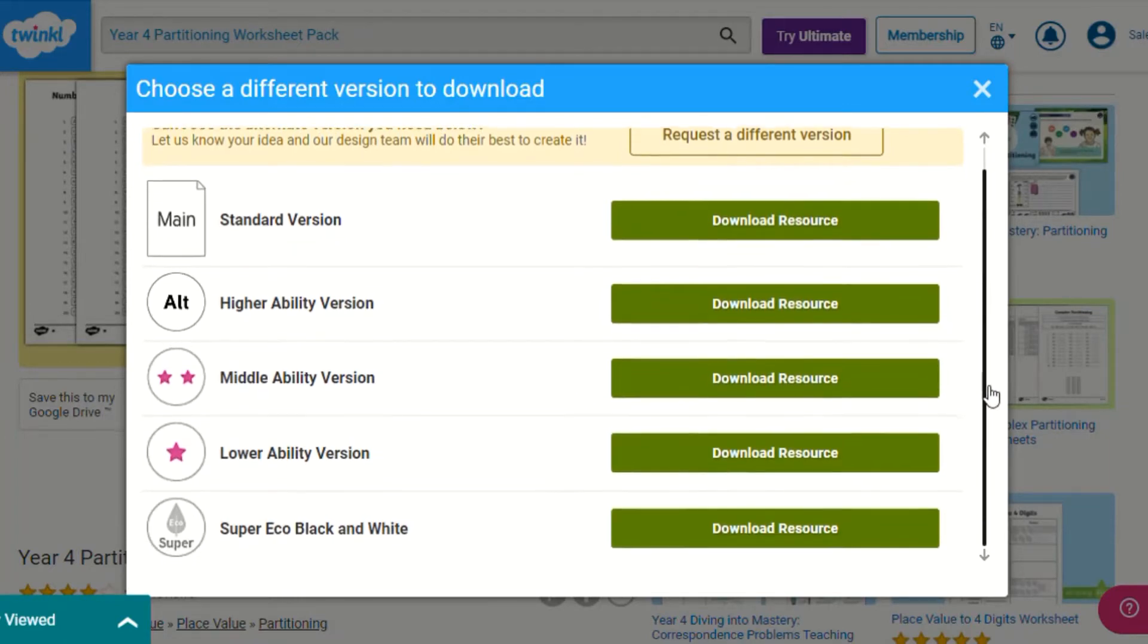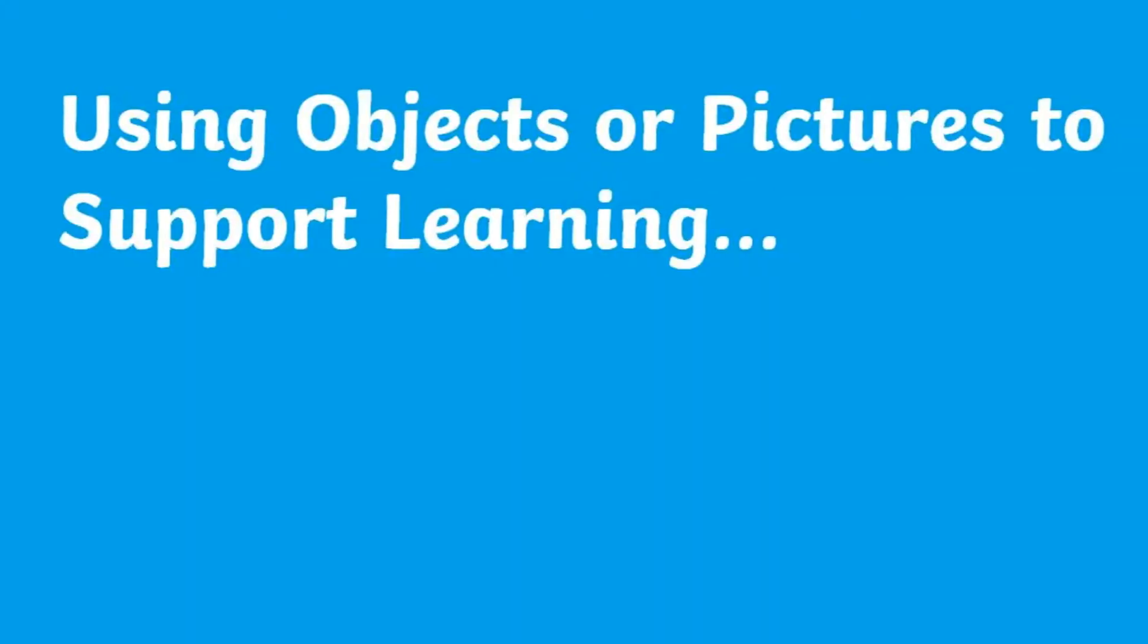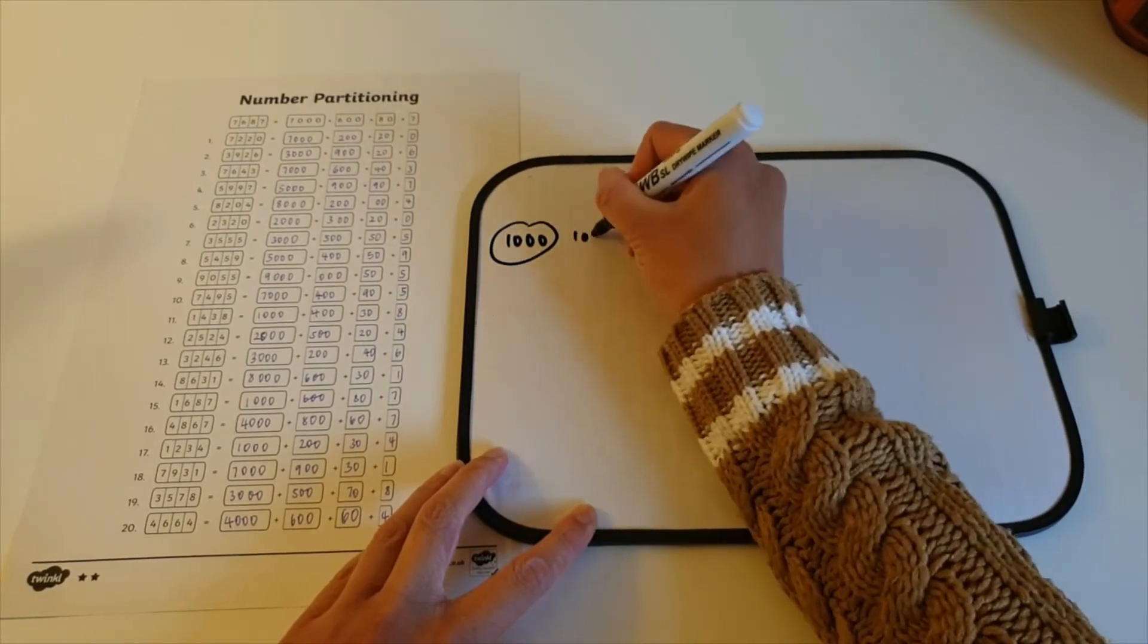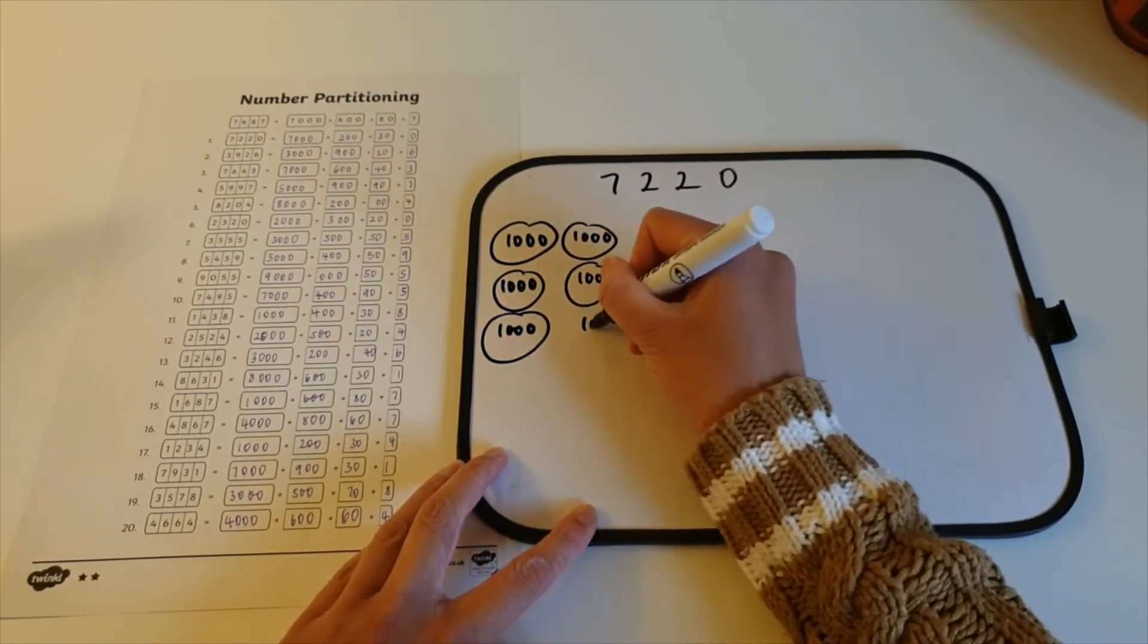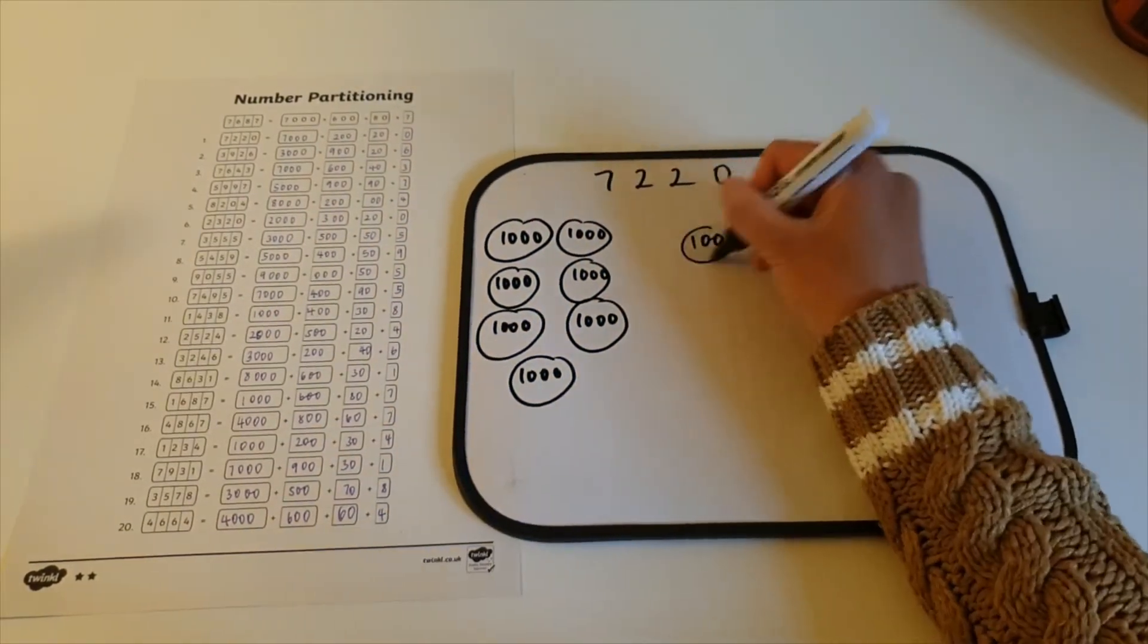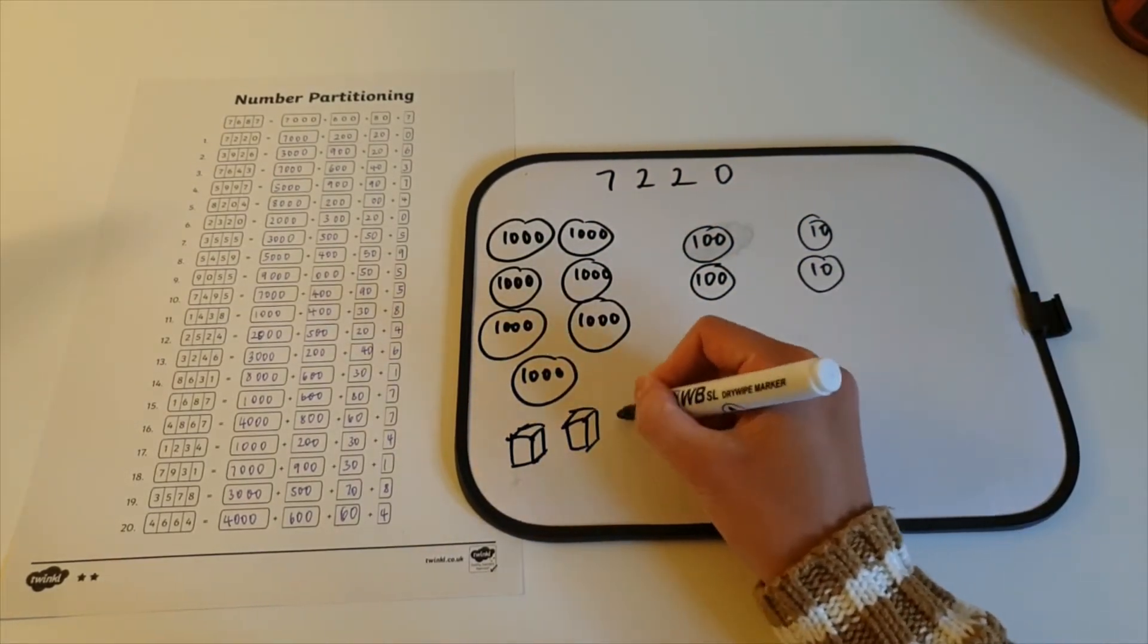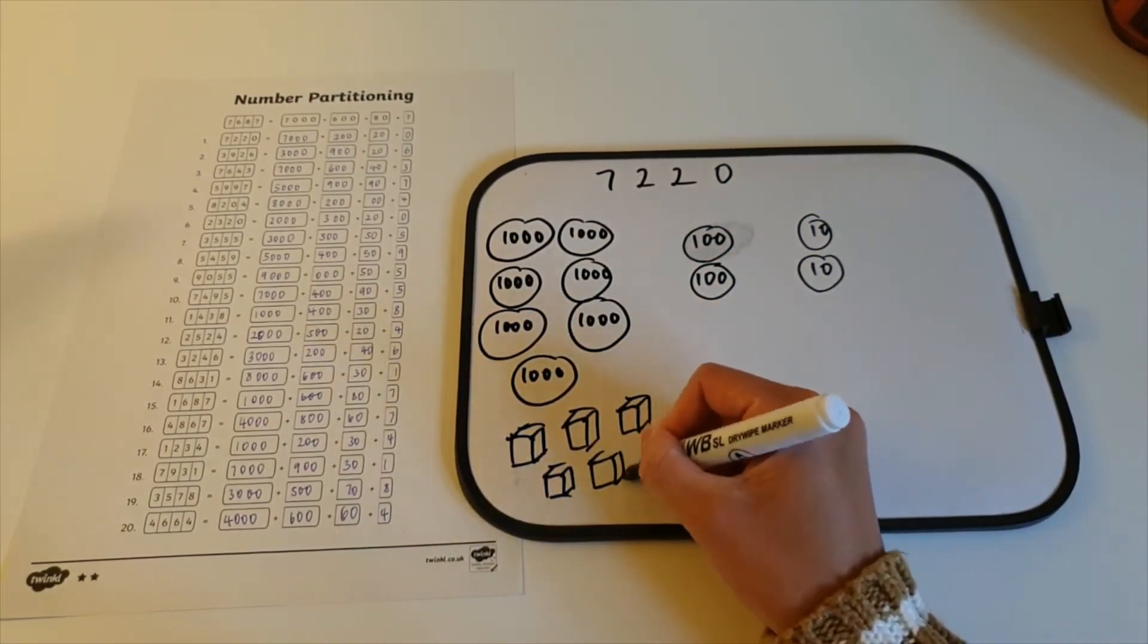If you're looking to extend children's learning further using this task, here are a few ways. You could take a more visual or concrete approach by encouraging children to draw or use objects to demonstrate partitioning each number. Children could draw or use base 10 or even place value counters to prove their answer when partitioning.